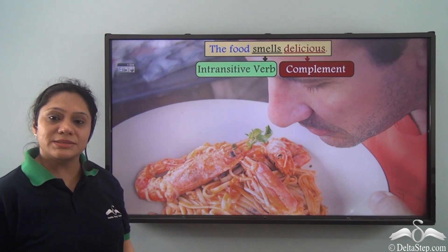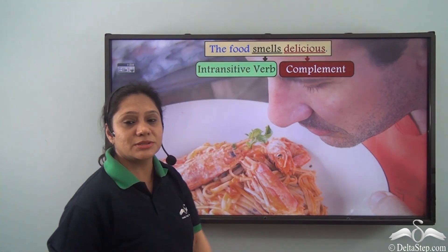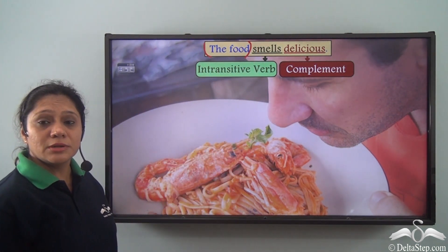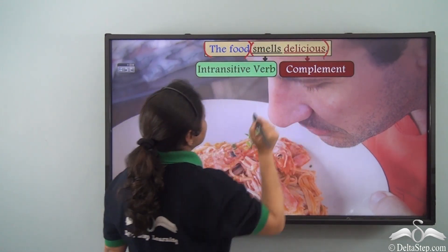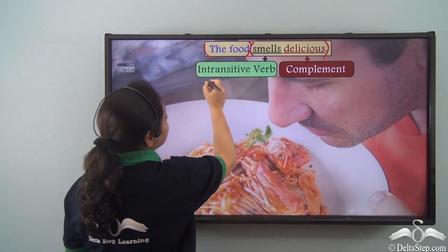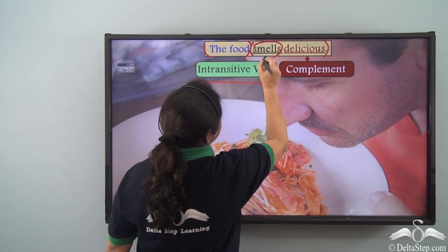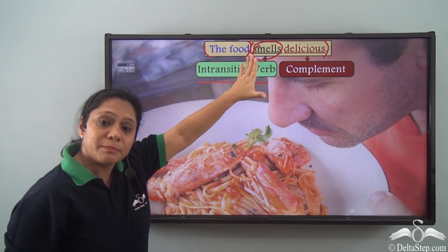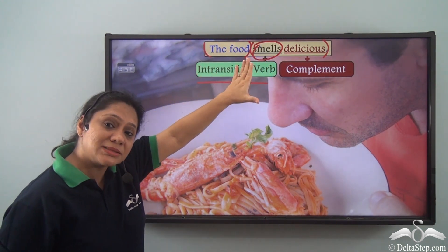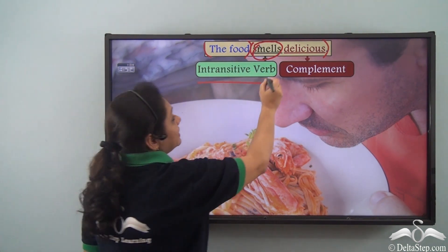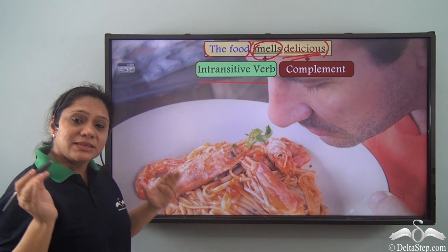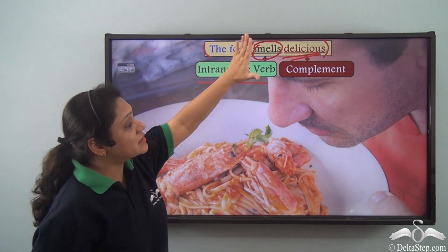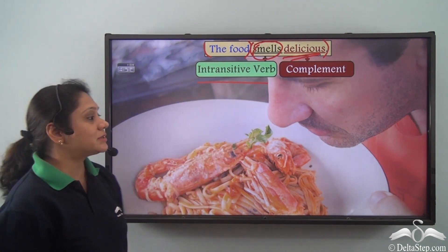Now let us read this sentence: 'The food smells delicious.' In this sentence we have the subject 'the food' and the predicate 'smells delicious.' This predicate has an intransitive verb 'smells.' If I just say 'the food smells,' the predicate will not be complete. So if I add the complement 'delicious,' our predicate is complete and the sentence makes complete sense. 'Delicious' is the complement here.